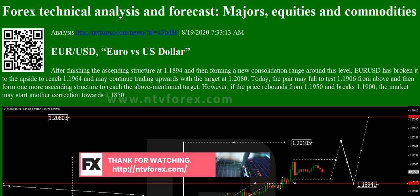Brent: Brent is still consolidating above 45.20. Today, the pair may grow towards 46.00 and then start a new correction to reach 45.60. After that, the instrument may resume trading upwards with the target at 47.00.